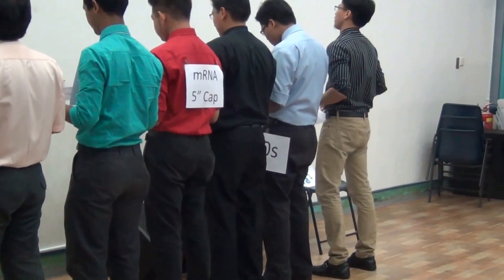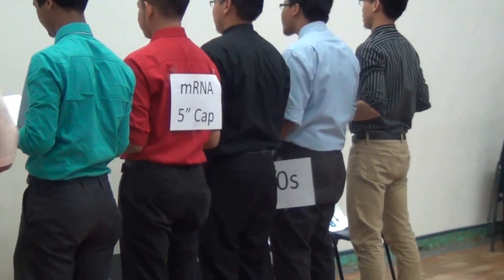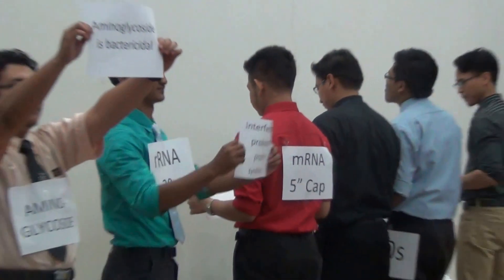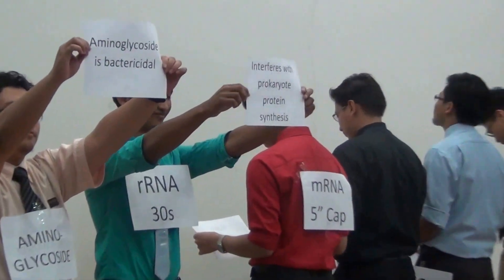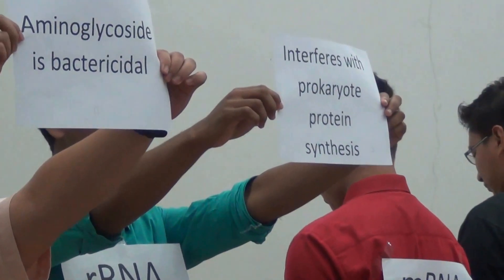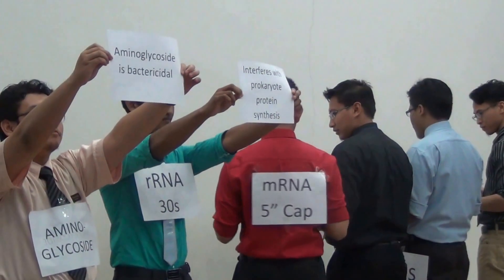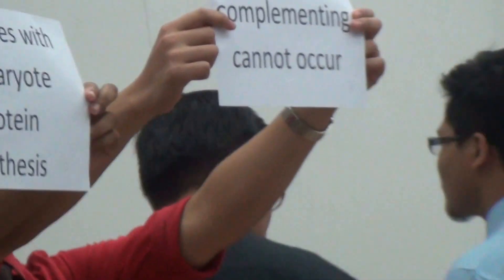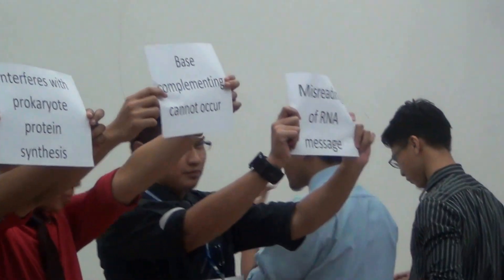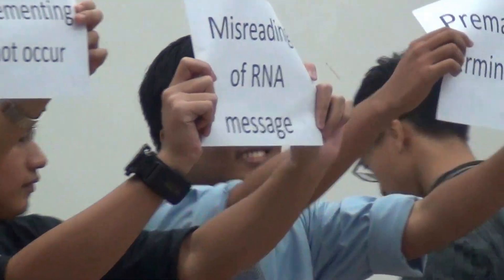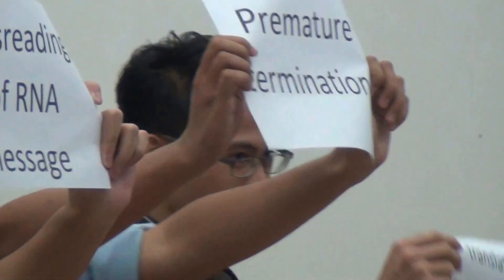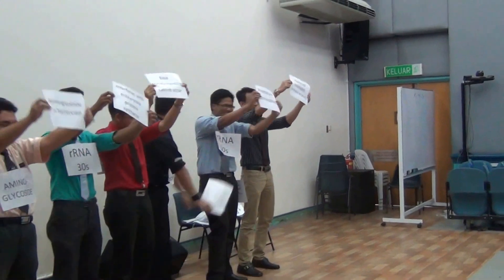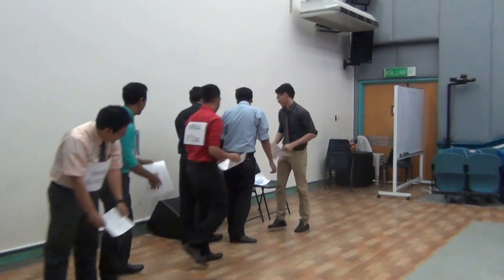Let's recap: Aminoglycoside is bactericidal. It interferes with prokaryotic protein synthesis, which leads to base complementing being unable to occur. The inhibitory effect causes misreading of the RNA message, premature termination, and inaccurate translated protein products. That's all from us — thank you.